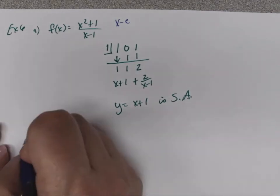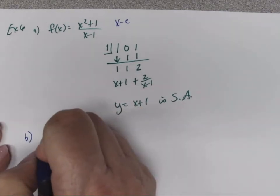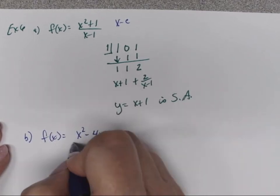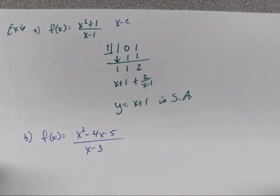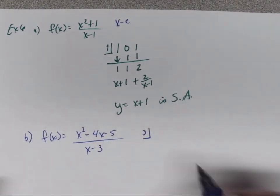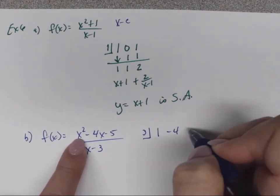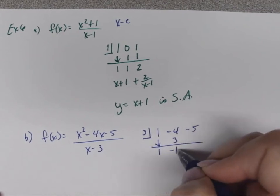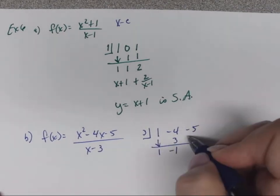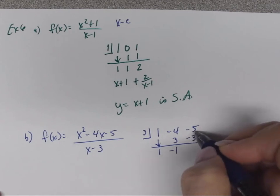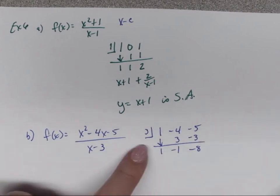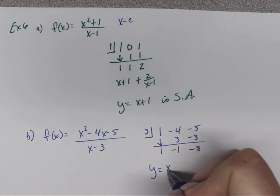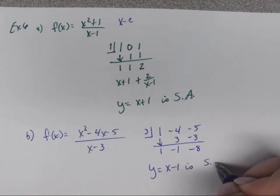Part B: f(x) = (x²-4x-5)/(x-3). Using synthetic division with c = 3, coefficients 1, -4, -5. Bring down 1; 1×3 = 3; 3+(-4) = -1; (-1)×3 = -3; -3+(-5) = -8. The remainder is -8, which we ignore. The slant asymptote is y = x-1.